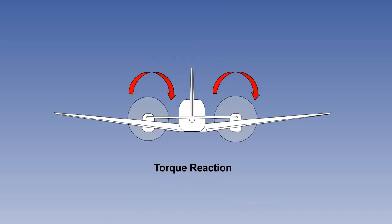When the engine turns the propeller, the equal and opposite reaction tries to turn the engine the other way — the torque effect being to roll the aircraft to the left. If the left engine were to fail, it would result in a bigger rolling moment to the left. As with asymmetric blade effect, this happens only with co-rotating propellers. Note, however, that if the propeller is windmilling, the torque is reversed, but is much less than the torque of the live engine.